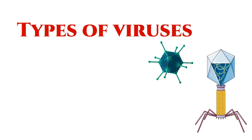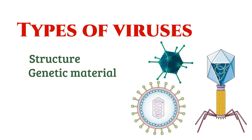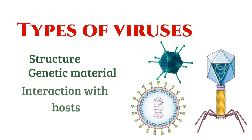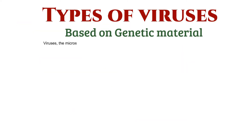Viruses, the microscopic agents of infection, come in various types, classified by their structure, genetic material, and how they interact with hosts. Let's explore them one by one. Viruses come in diverse types classified by their genetic material.